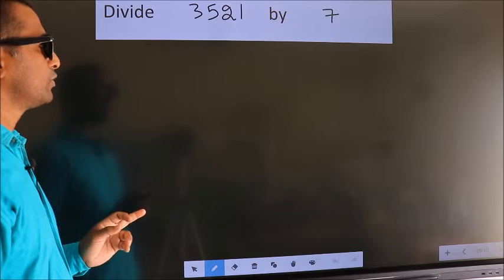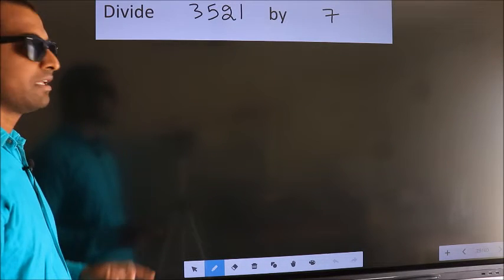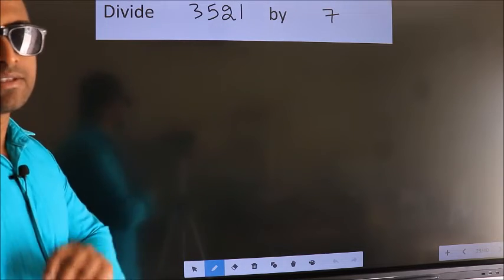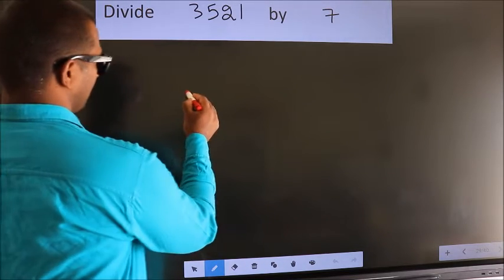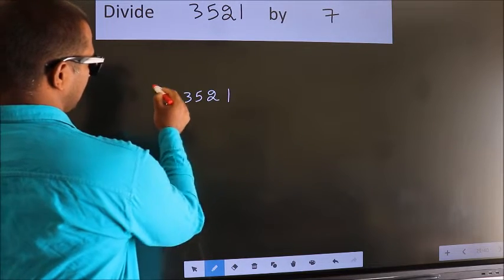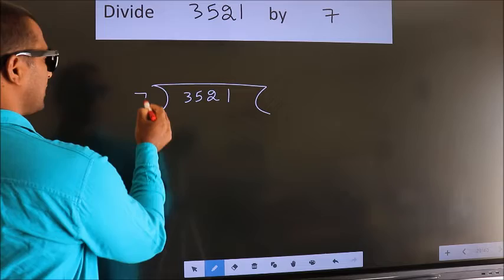Divide 3521 by 7. To do this division, we should frame it in this way. 3521 here, 7 here.